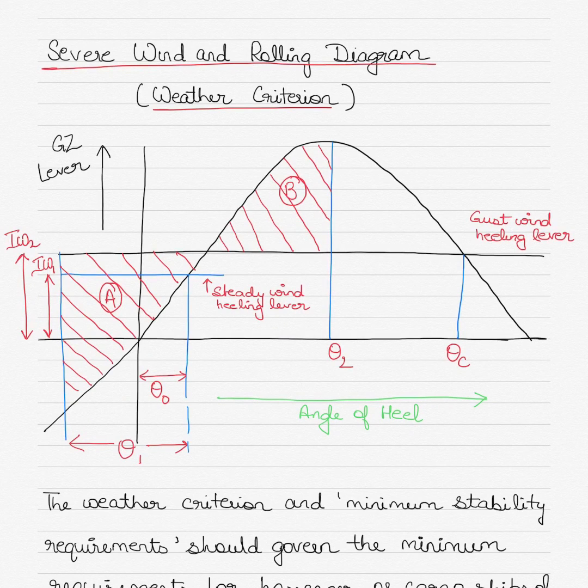As you see on your screens, I have drawn the stability diagram or what we call the GZ curve, where the values of GZ are plotted against various angles of heel as experienced by vessels due to wind pressure of varying strengths.